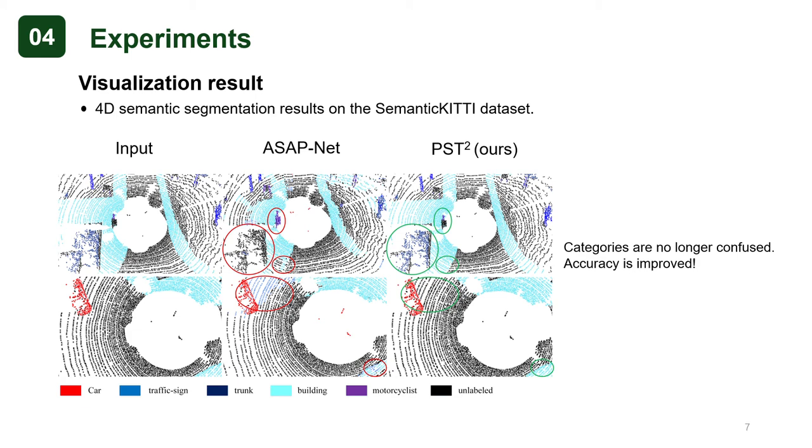This is our 4D semantic segmentation results on the SemanticKITTI dataset. We can see that categories are no longer confused and accuracy is improved.